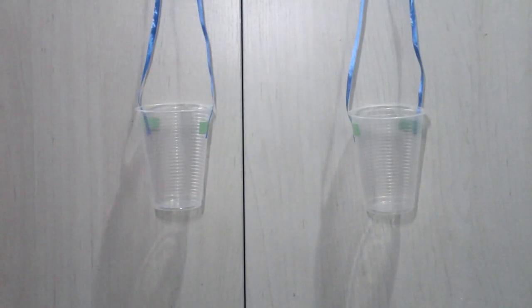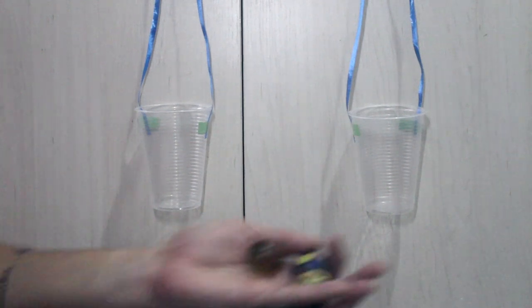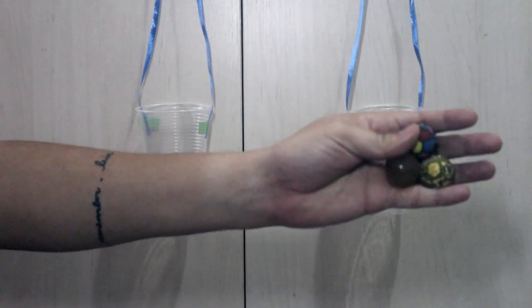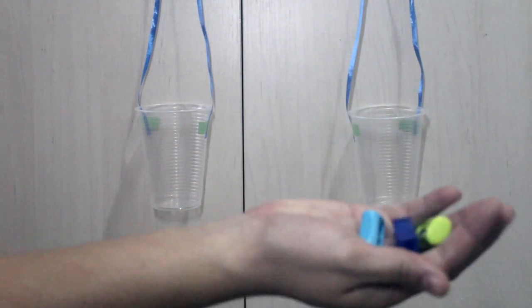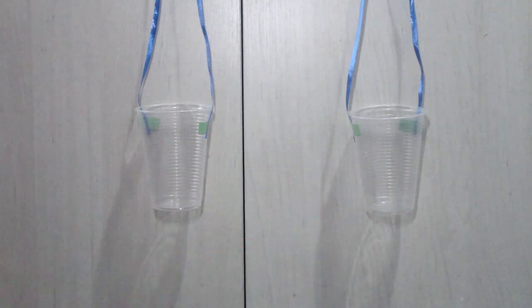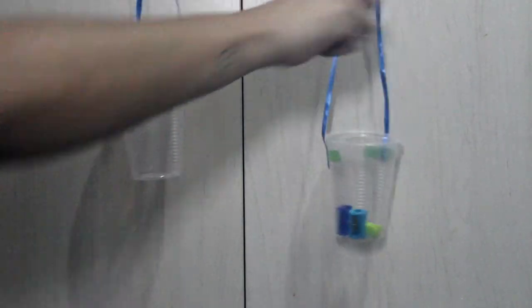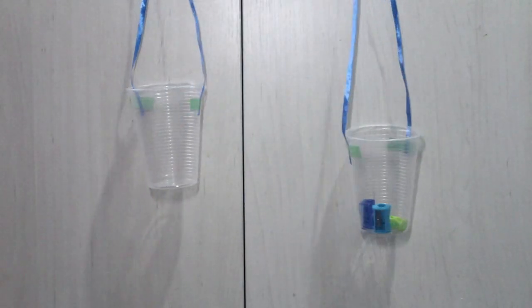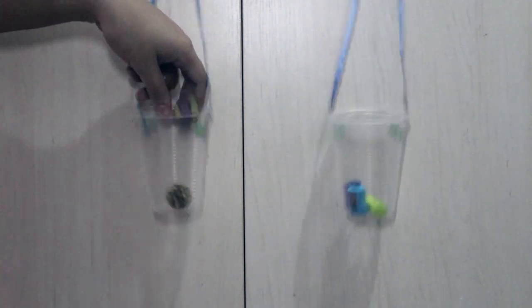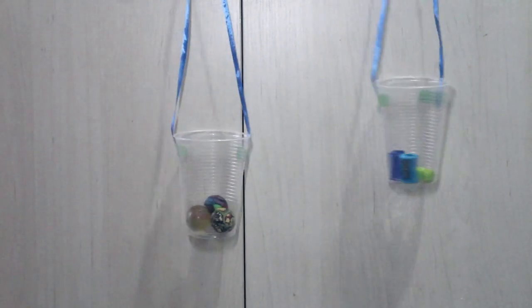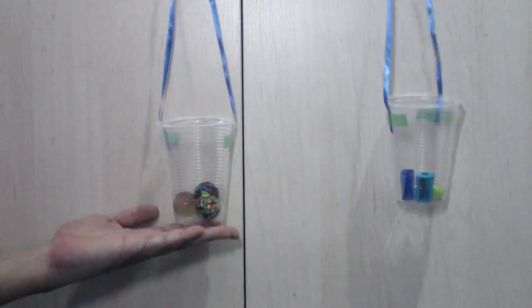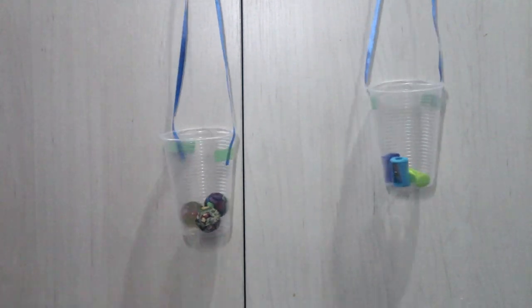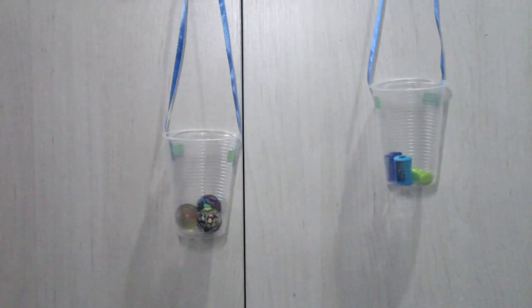Ok. Now, it's time for us to weigh some things. Ms. Raimi got three balls here and three pencil sharpeners. We are going to see which one is light and which one is heavy. I am going to place the pencil sharpeners first. Now, I am going to place the balls. Oh my gosh! Check it out! The balls are heavier than the pencil sharpeners.